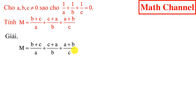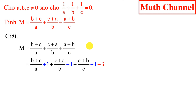Để làm được điều này, ta sử dụng kỹ thuật cộng mỗi phân thức cho 1. Khi đó, ta có biểu thức M bằng tổng của 3 phân thức, trong đó mỗi phân thức được cộng thêm 1. Và cuối biểu thức M chúng ta trừ đi 3. Do chúng ta cộng 3 số 1, tức là cộng 3, cho nên chúng ta phải trừ đi 3. Thì biểu thức M mới không thay đổi.